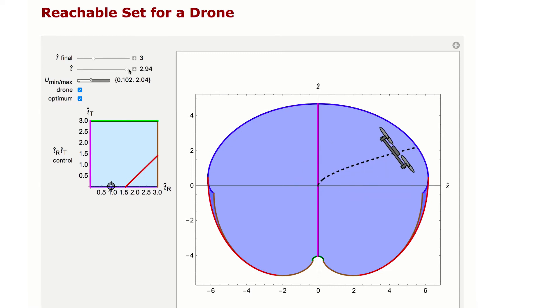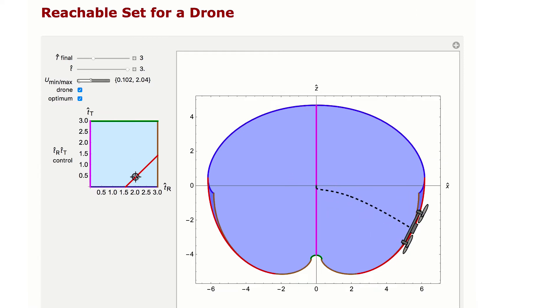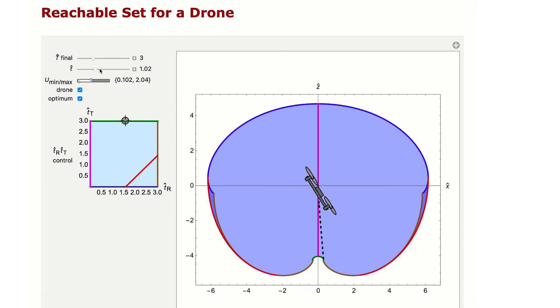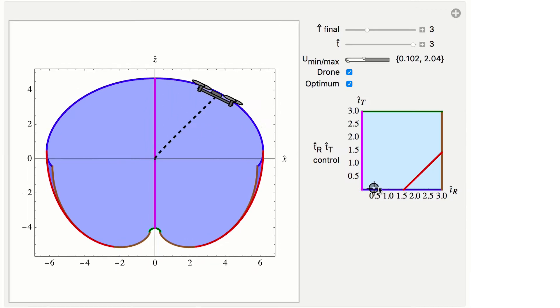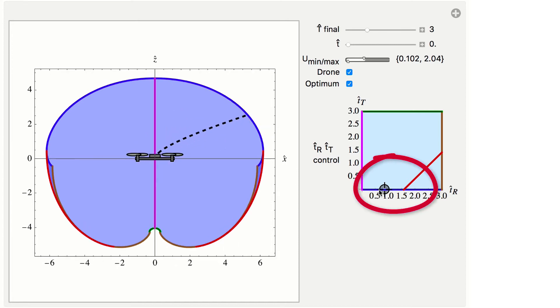We made an online demonstration to illustrate this. The plot shows the reachable set of positions in blue and the path of a particular drone with a dashed line. The optimal control inputs are all functions of two switching times, TR and TT, which are controlled by the locator.